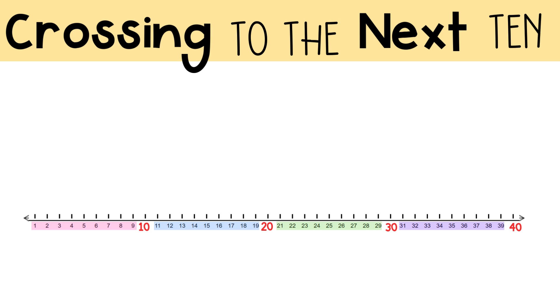When we cross to the next 10 while adding, it means we go from one group of 10s to the next group of 10s. Imagine you're counting and you reach the number 10, 20, 30, 40, and so on. If you add a number that makes you go past the next 10's number, you're crossing to the next 10.